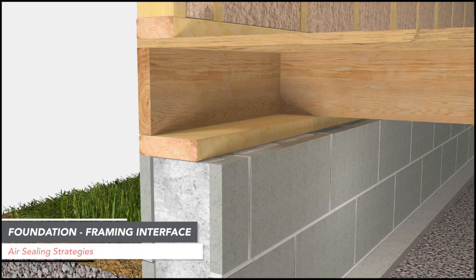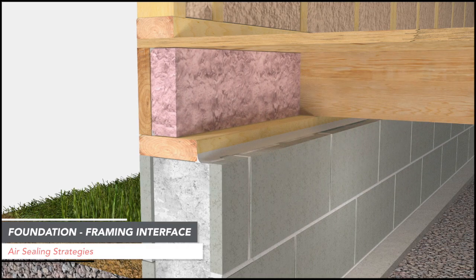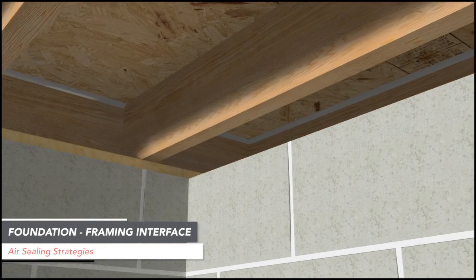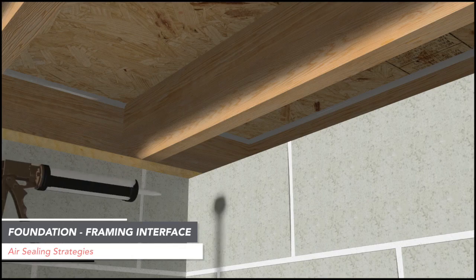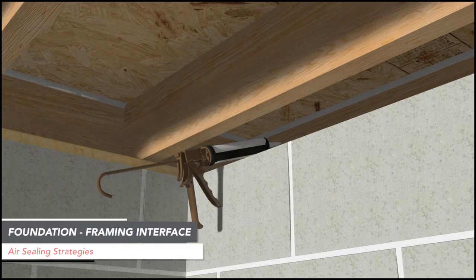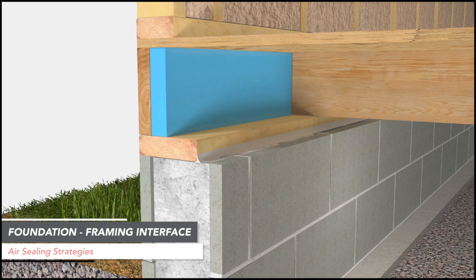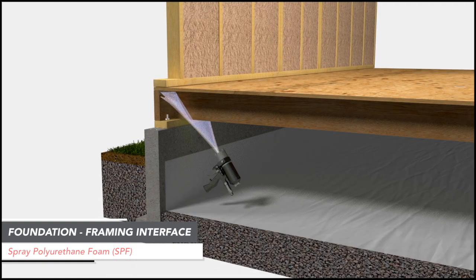There are several strategies available to insulate and air seal the framing foundation interface. One option is to seal these gaps with caulk and sealant and insulate the rim joist with a fiberglass batt. Unfortunately, the labor required to properly caulk and seal the perimeter of the rim joist between each floor joist is costly and tedious. Additionally, it may be impossible to caulk and seal the rim joist gaps where the floor joists are parallel and spaced closely to the rim joist. Another option is to cut foam board insulation to fit between each floor joist and seal the perimeter of the foam board, but while this is effective, it requires significant time and labor.